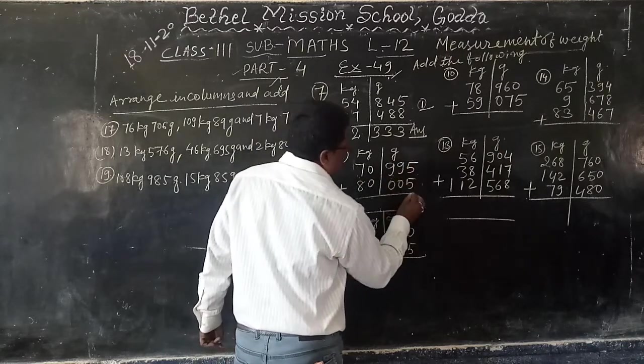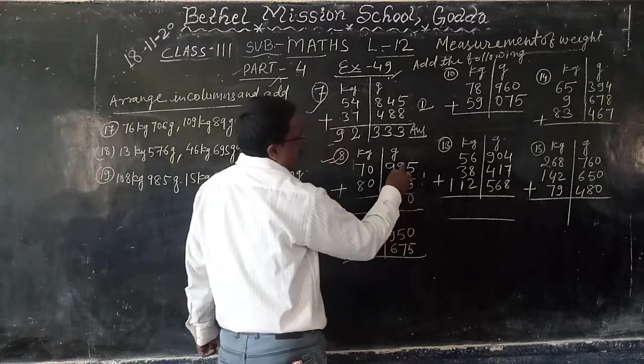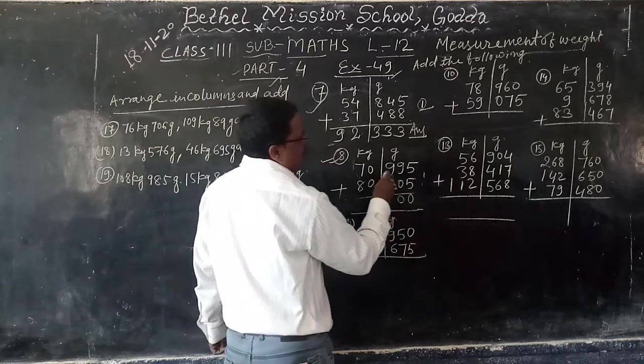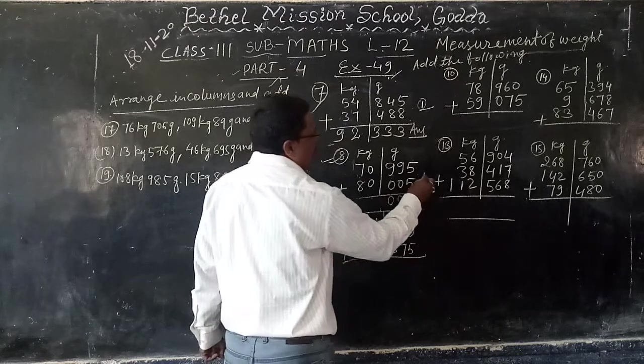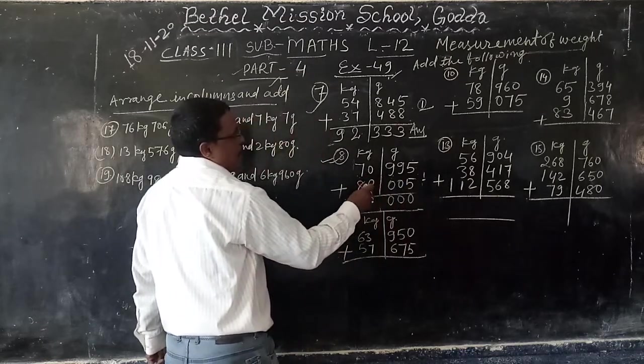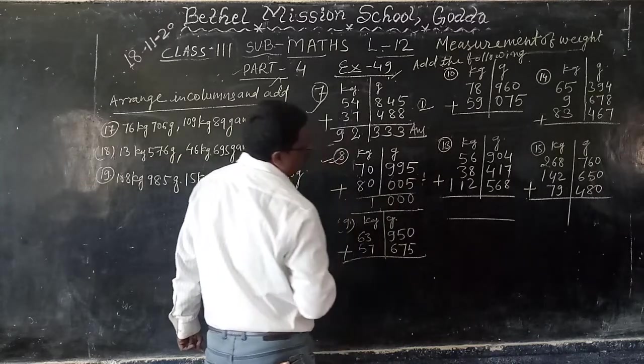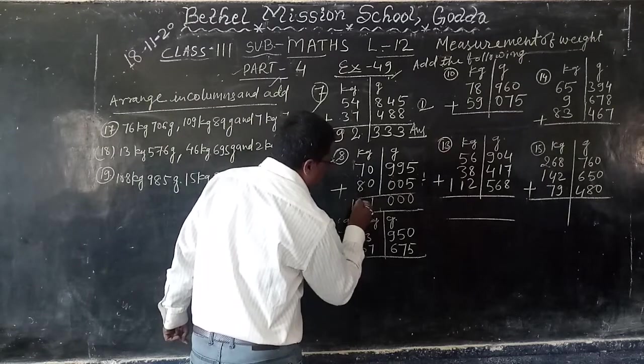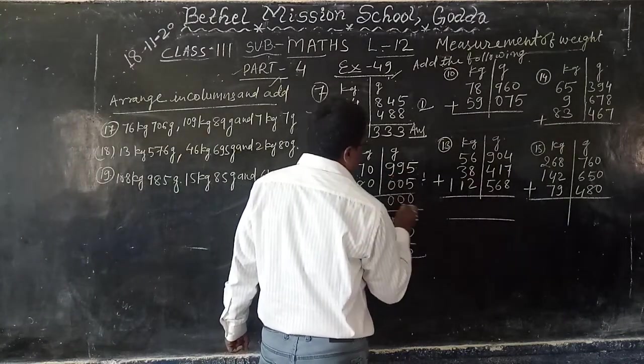5 plus 5, 10. 0 right, 1 in hand. 9 plus 0, 10. Again, 0 right. 9 plus 0, 10. Again, 0 right, 1 in hand. 0 plus 0, 0 plus 1. 1 right here. 7 plus 8, 15. 151 kg, 0 gram. Answer.